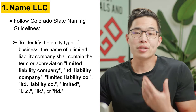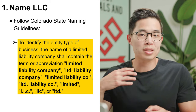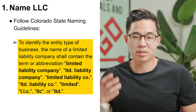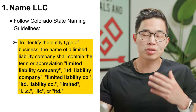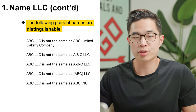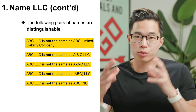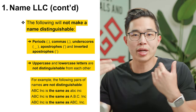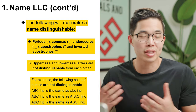Step number one is to name your LLC, and you do need to follow some state naming guidelines. In the state of Colorado, to identify the entity type of your business, your LLC name needs to contain one of the designated identifiers — most people just go with LLC as that's the easiest. The name you choose must also be distinguishable from other businesses registered with the Secretary of State. Things like periods, commas, and capitalization are not going to distinguish your name from someone else's.